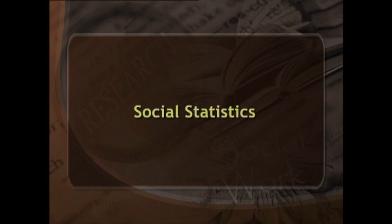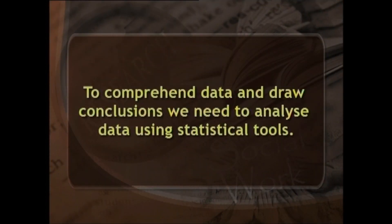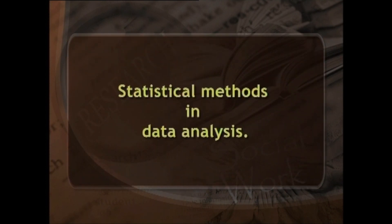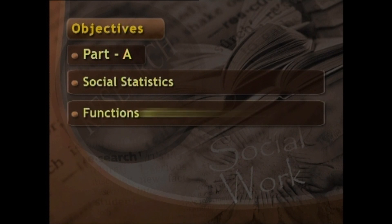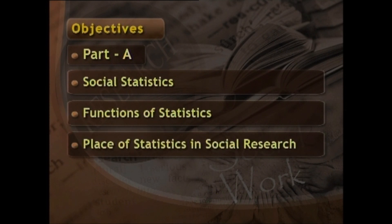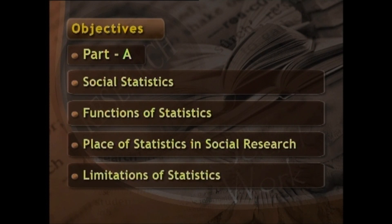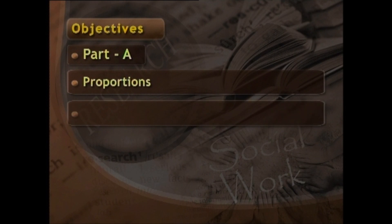Welcome to social statistics. In our previous lesson we discussed data processing and tabulation. To comprehend data and draw conclusions we need to analyze data using statistical tools. The aim of this lesson is to make you understand the use of statistical methods in data analysis. This lesson is divided into two parts A and B. In part A we will discuss social statistics, functions of statistics, the place of statistics in social research, and limitations of statistics — proportion, percentage.